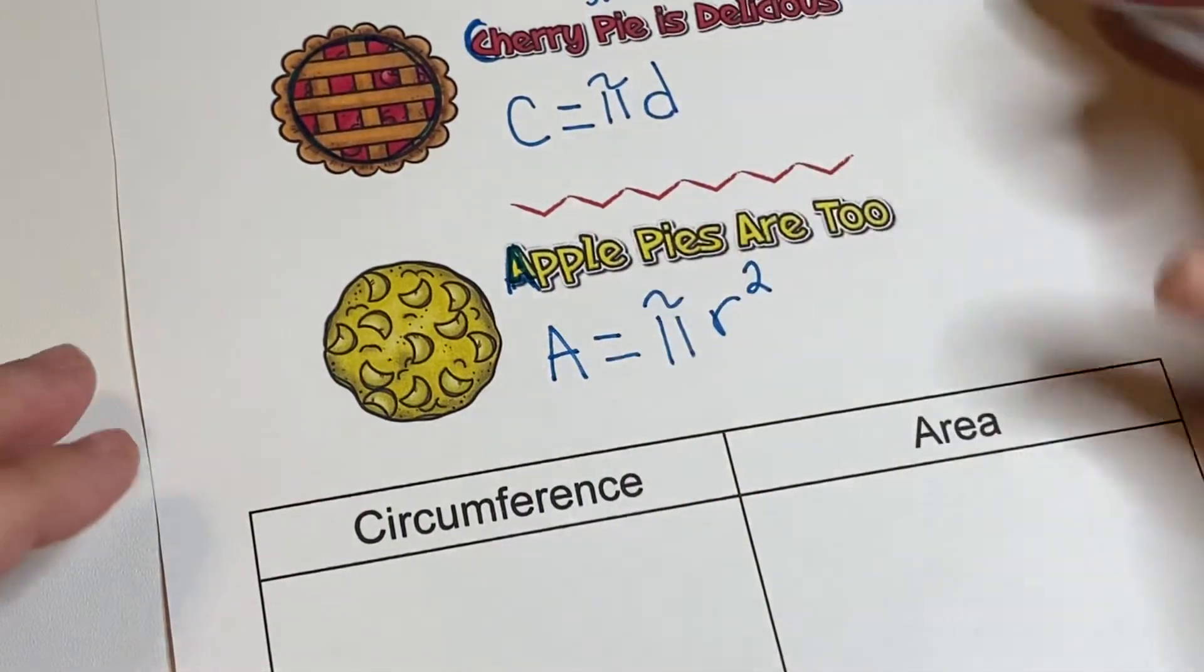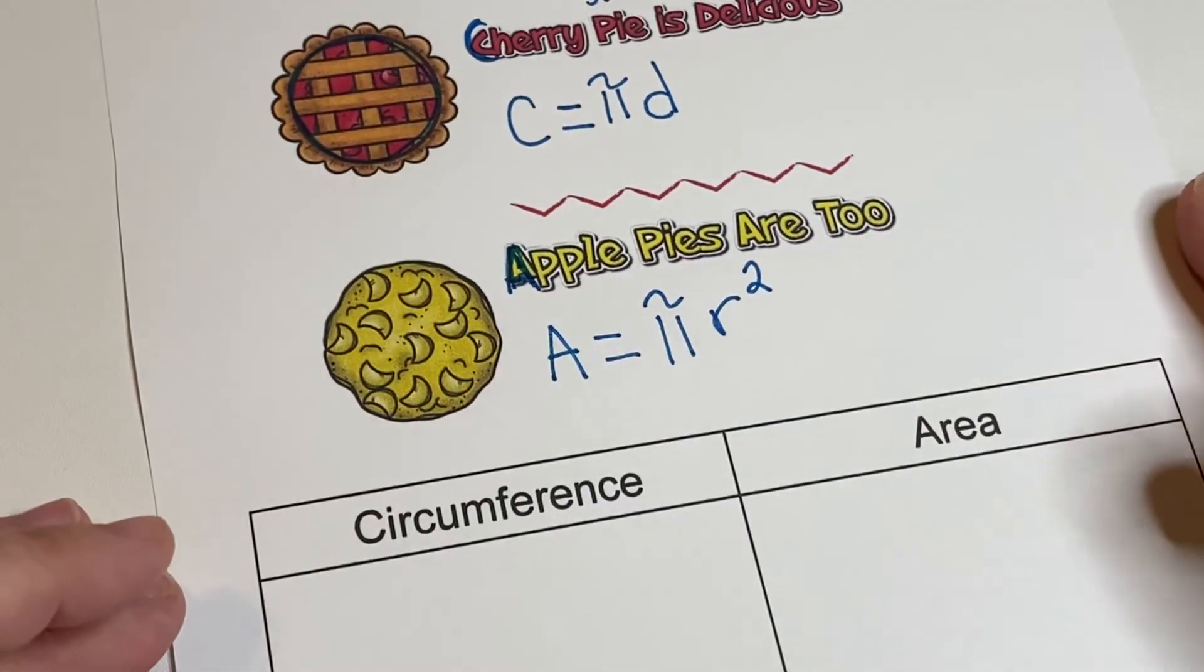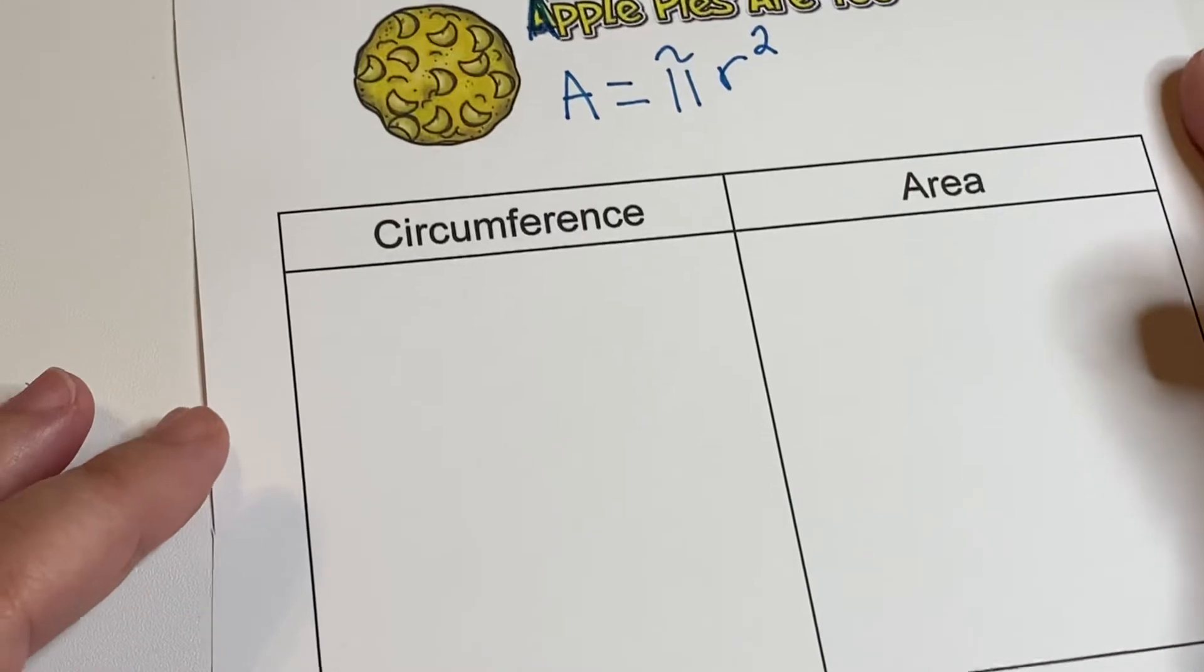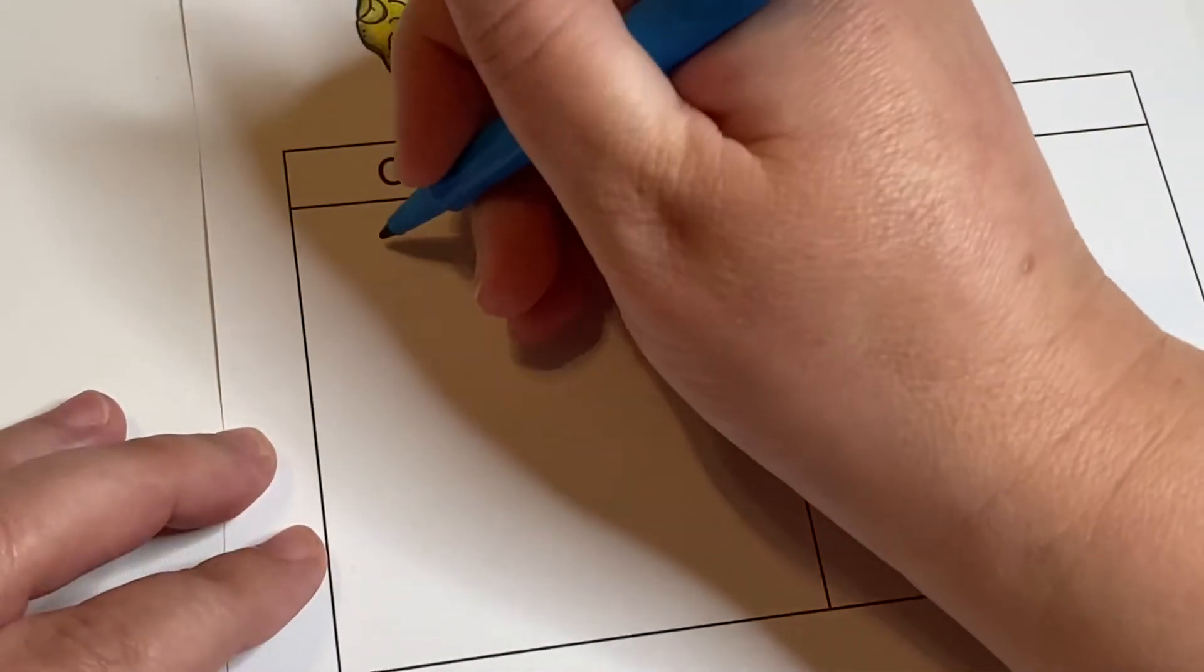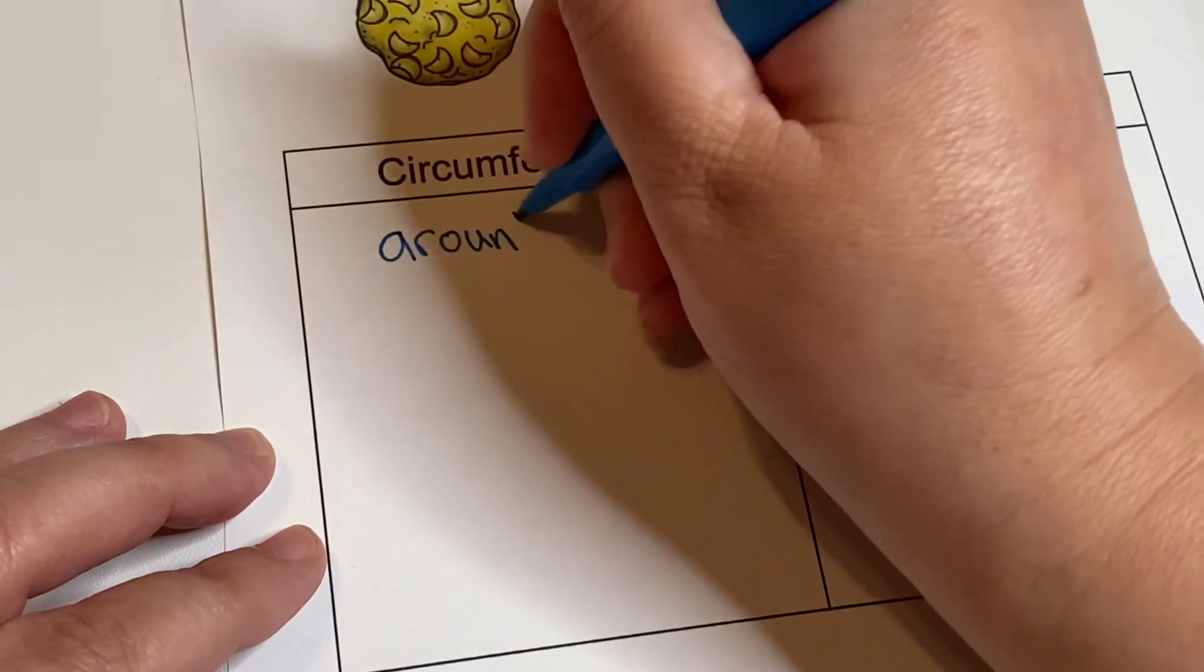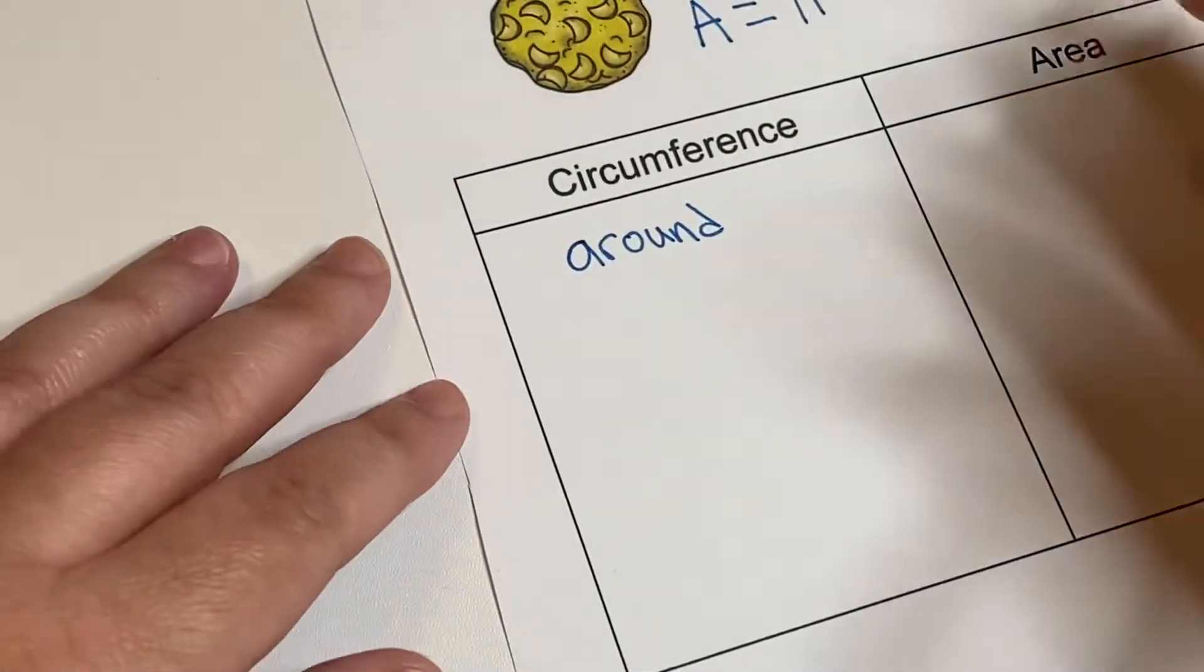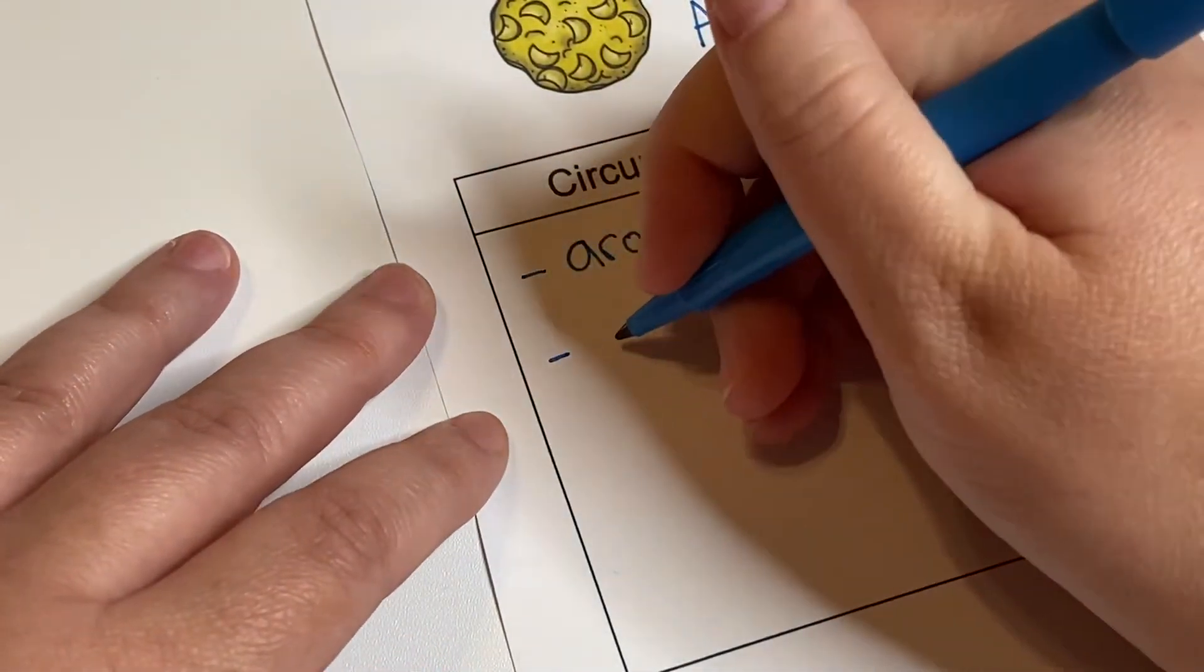And once you know the formula, then you'll be able to plug in numbers and calculate circumference and area. So let's just remind ourselves that circumference is when we go around the outside of the circle. Circumference is a distance.